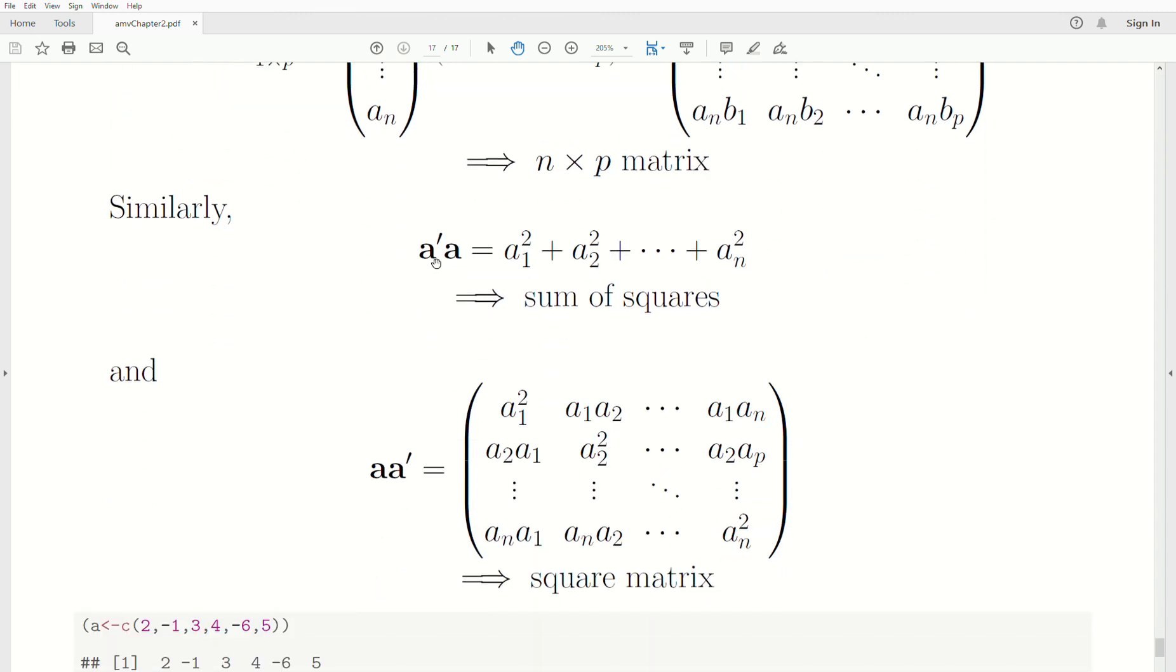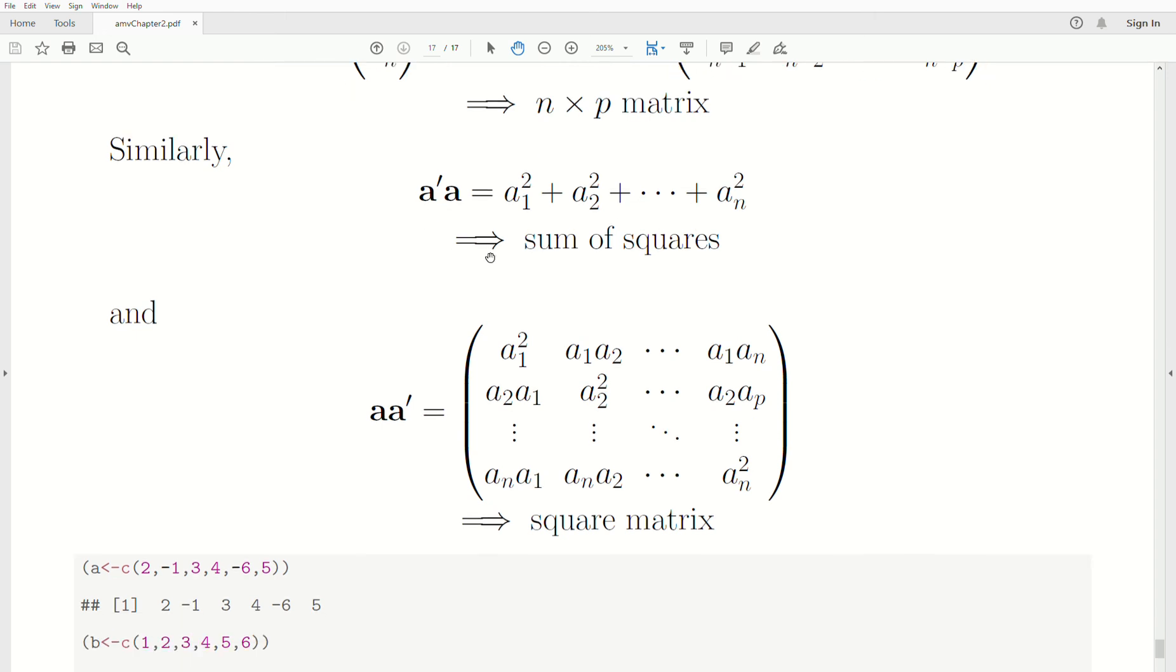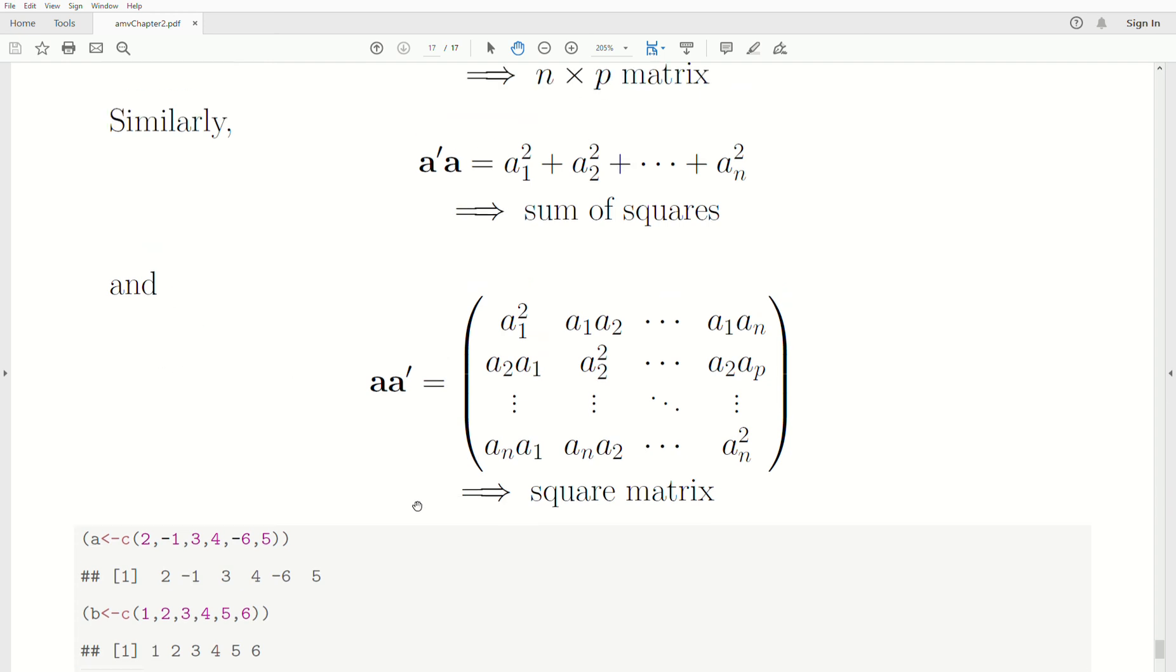Now, similarly, if we take A transpose A, so we take the dot product of itself, we get what's called the sum of squares for that vector, right? And this will deal with, yeah, we'll do more on that later. But we can also take this, A, so this is a column vector, and this is a row vector now because we transpose it. And when we multiply that out, we get an N by N matrix of this form here. This will play a part when we start looking at covariances and correlations and stuff.